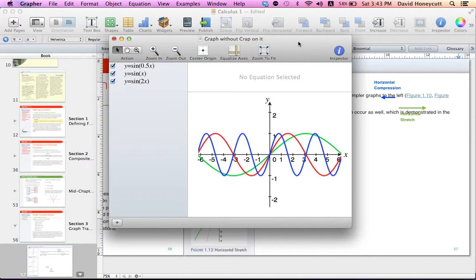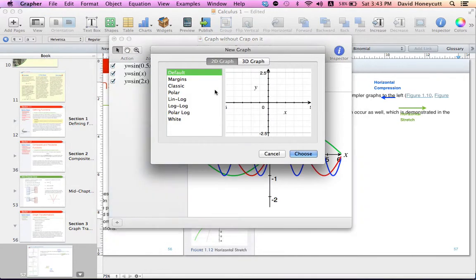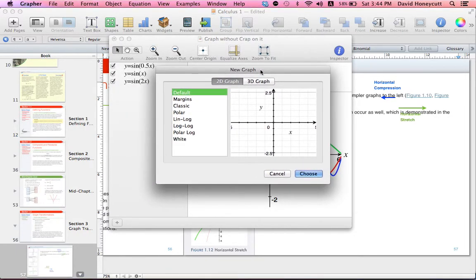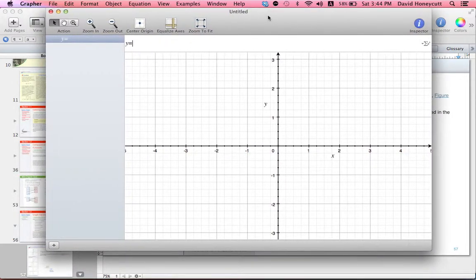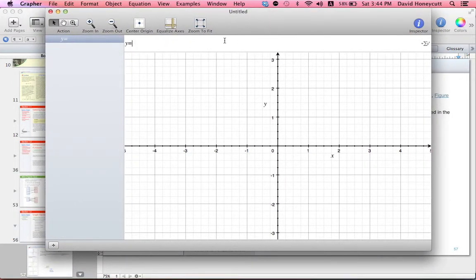When I first used it, you click new, it asks you for this new graph thing. By the way, if you hear thunder in the background it's because it's raining here. So you go to new graph, 2D graph, default, choose, and this will come up, and you'll be like, okay, I got this far, now what the crap do I do?